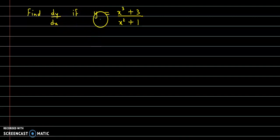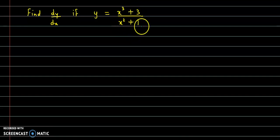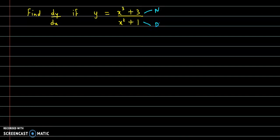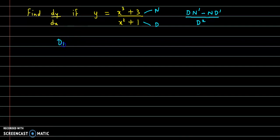Find dy by dx if y is equal to x cube plus 3 upon x square plus 1. Here we use the derivative using the quotient rule. This is our numerator and this is the denominator. The quotient rule is: denominator into derivative of numerator minus numerator into derivative of denominator, upon denominator square.